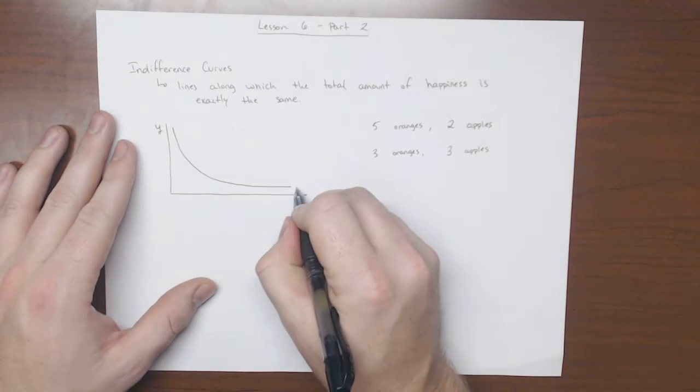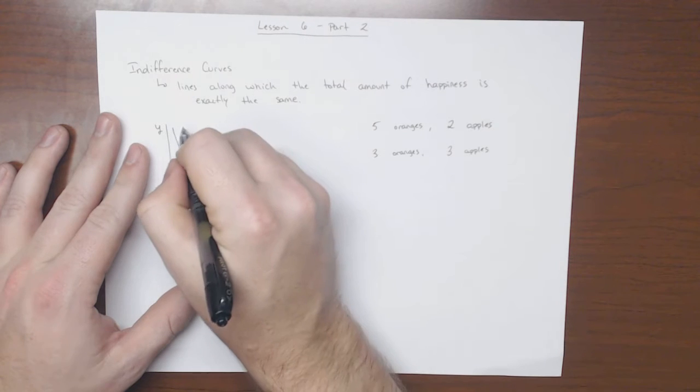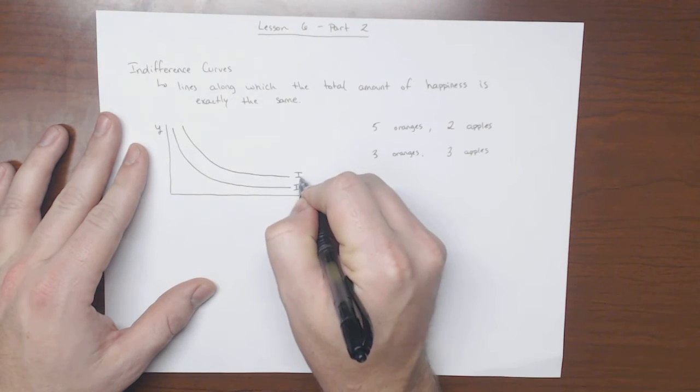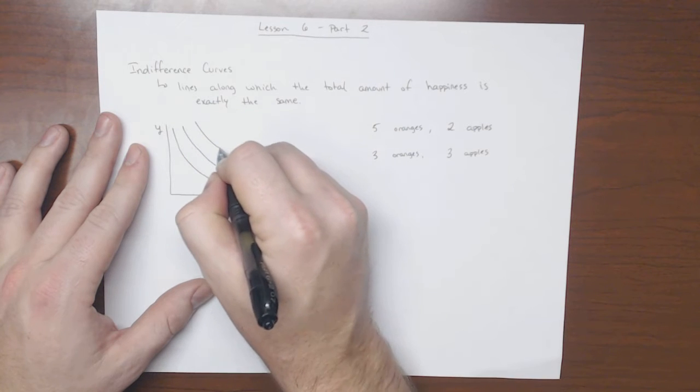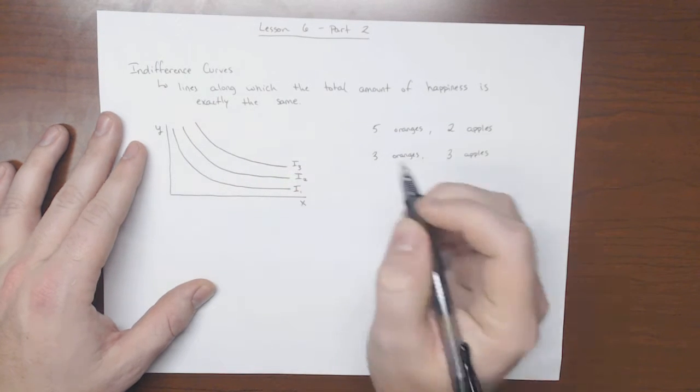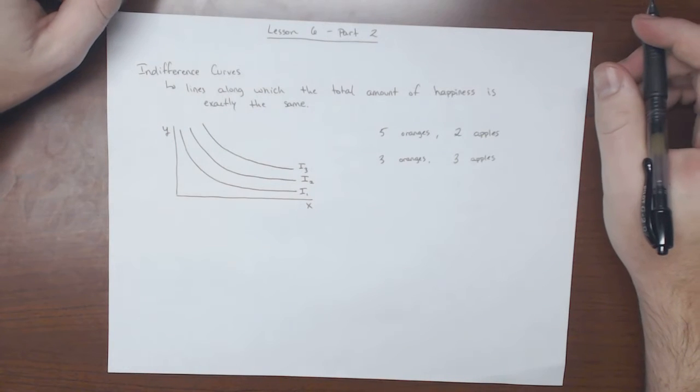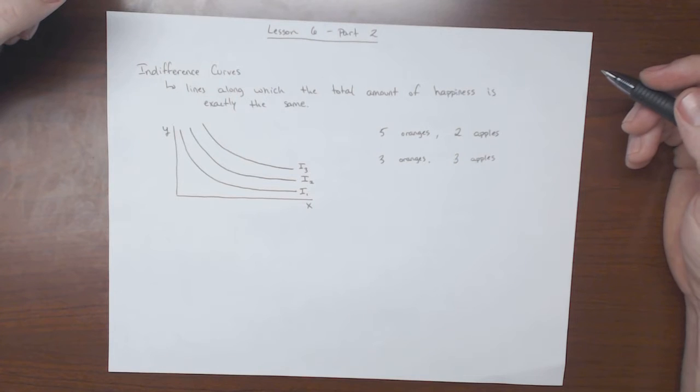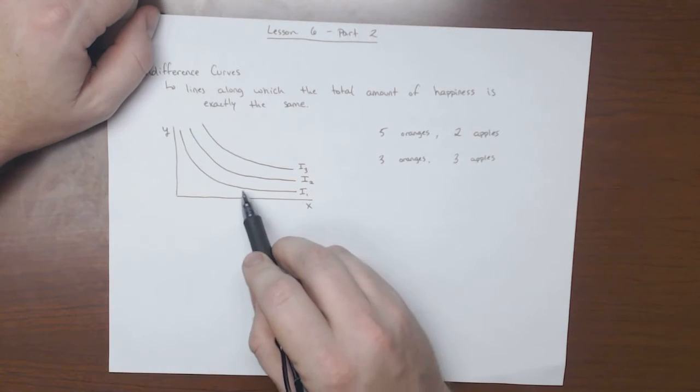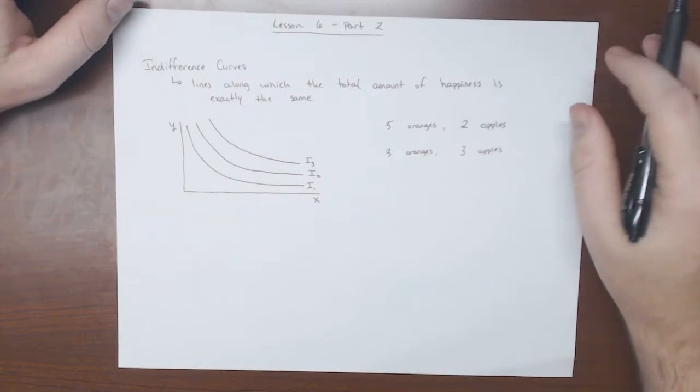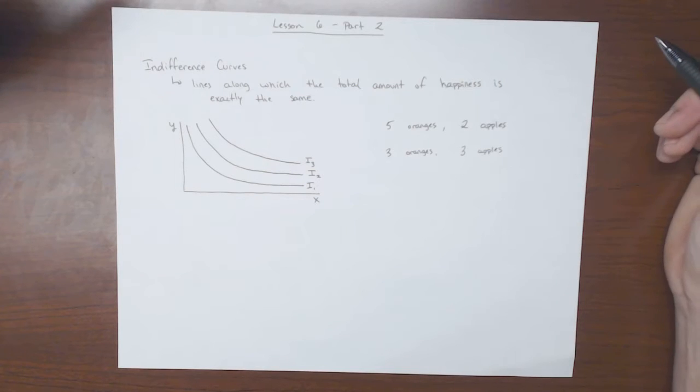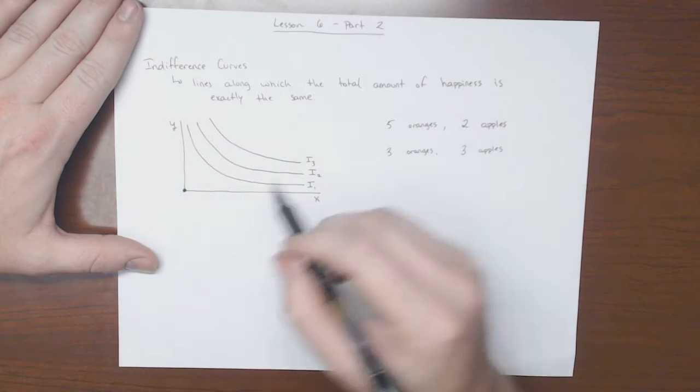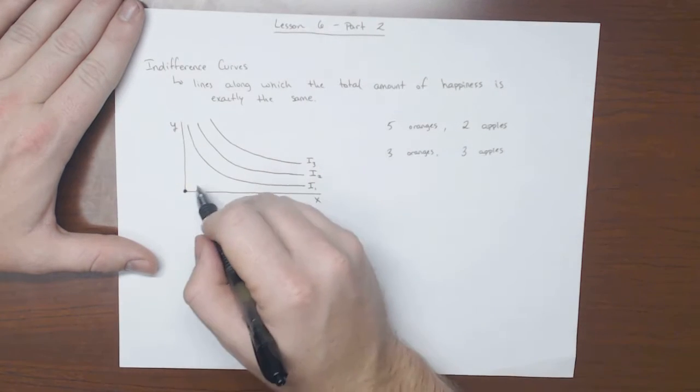Okay, so we can call this line I1, and we could have another one which we can call I2, and we can have another one which we call I3. So in a lot of respects, they're very, very similar to those iso value lines that we were showing earlier. Each one corresponds with a different level of happiness, or a different amount of happiness. As we move further and further away from this origin point, our happiness increases.